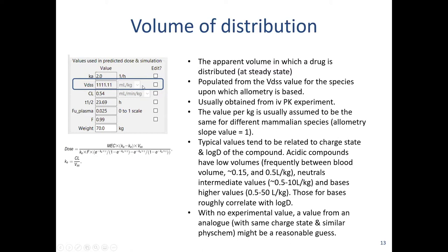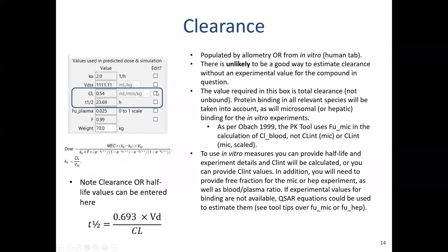If you're struggling because you don't have PK for a compound, it's useful to know that acidic compounds often have low volumes, while neutrals and bases are somewhat higher. For some compounds, volume may correlate to some extent with physicochemical properties like log P or log D. Using that might be a reasonable guess if you have no PK data — though PK data is obviously better.